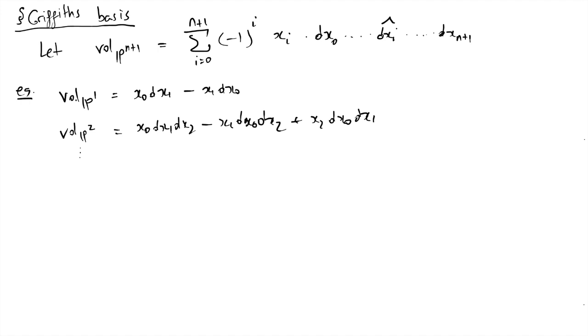This one is x_0 dx_1 dx_2 minus x_1. Okay, so you get the idea. And the reason I call it the volume form is because if you restrict to an affine chart where x_i is invertible, let's say, then it becomes the standard volume form on an affine chart on an affine space up to sign. So let me write this down.